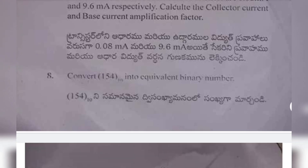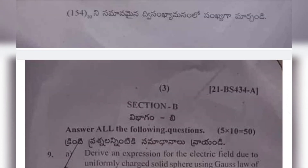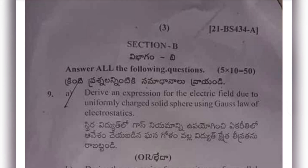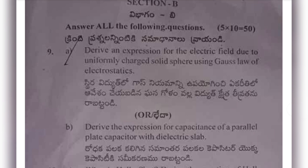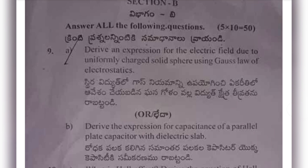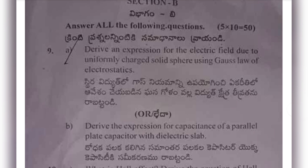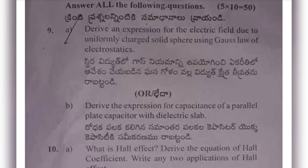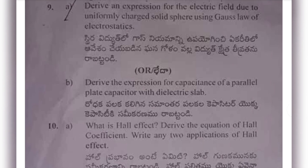Around 70 percent of questions repeat from previous papers. Ninth (a): derive an expression for the electric field due to a uniformly charged solid sphere using Gauss's law of electrostatics. Ninth (b): derive the expression for capacitance of a parallel plate capacitor with a dielectric slab.